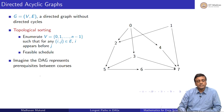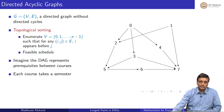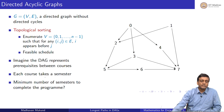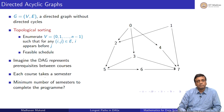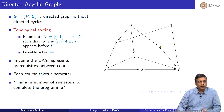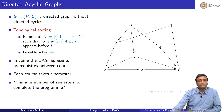If the DAG represents prerequisites between the courses and each course takes a semester, so you can finish and go to the next course only in the next semester, then the natural question to ask is how many semesters do I need to complete the remaining requirements? I have a set of requirements with some prerequisites between them. How many semesters do I need from now to finish the program?